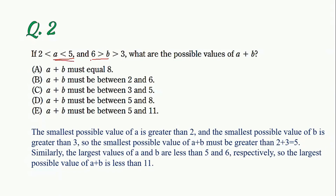So a is less than 5 and b is less than 6, which means a plus b is less than 11. The final answer is that 5 is less than a plus b which is less than 11.